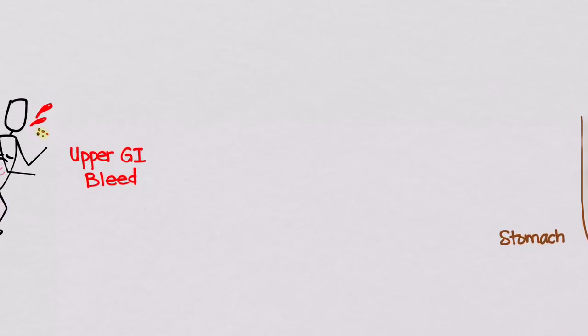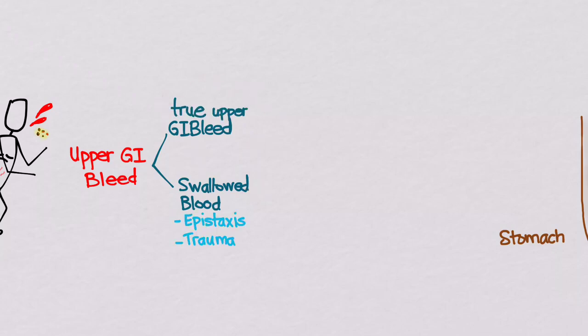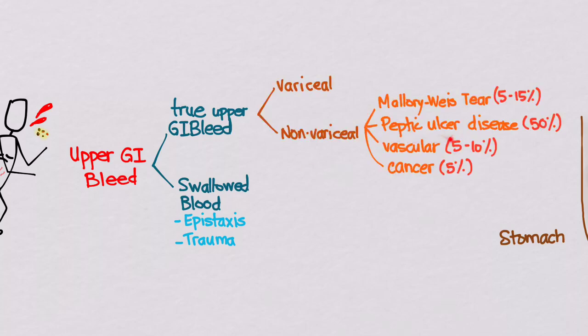When we classify it, first thing we've got to make is the distinction of whether this is a real or a pseudo cause coming outside of the GI tract. Because a GI bleed will usually present as the vomiting of blood, and it doesn't have to be coming from the GI tract. It could be swallowed blood from epistaxis or trauma. True upper GI bleeds, we break down into variceal and non-variceal. Most of the non-variceal bleeds are going to be due to peptic ulcer disease.